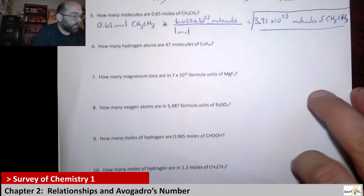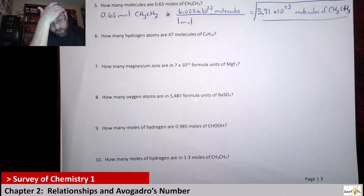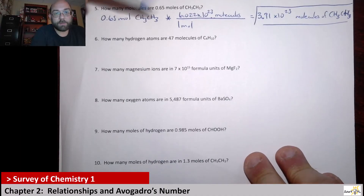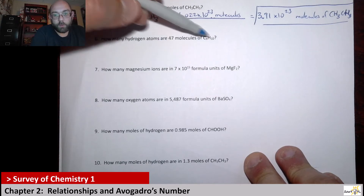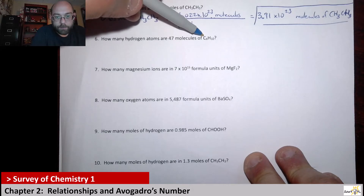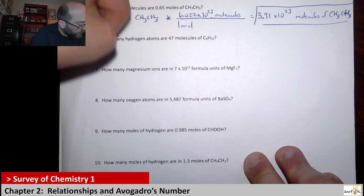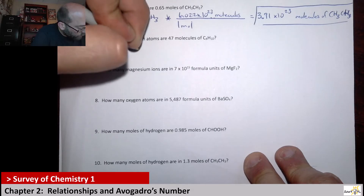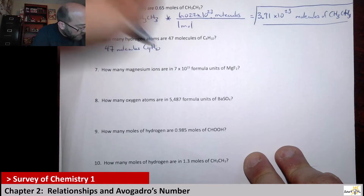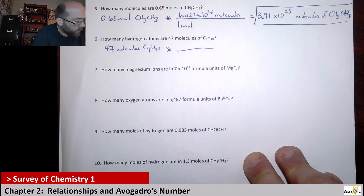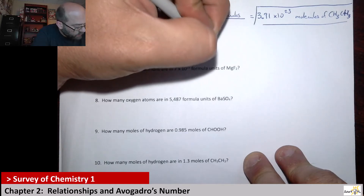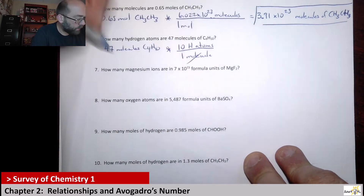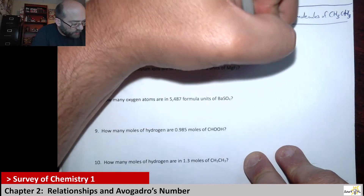Now, 6 through 10 are going to be a little easier because this is really just looking at the relationship. Number 6 says: how many hydrogen atoms are in 47 molecules of C4H10? We know the ratio — there are 10 hydrogen atoms per molecule. So if we have 47 molecules of C4H10, one molecule has 10 H atoms. So we're really just saying 47 times 10, which is 470 H atoms.